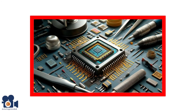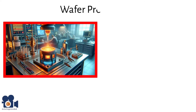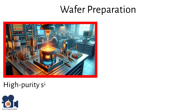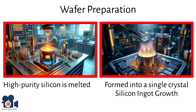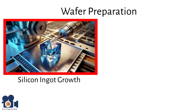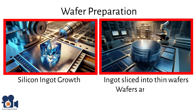The semiconductor fabrication process starts with wafer preparation, in which high-purity silicon is melted and formed into a single crystal ingot — called silicon ingot growth. This ingot is then sliced into thin wafers, which are polished to a mirror-like finish to provide a smooth surface for subsequent processing.